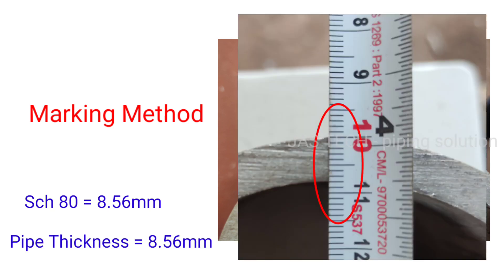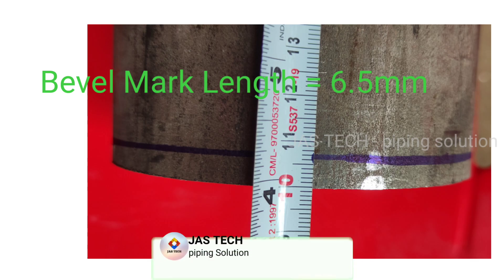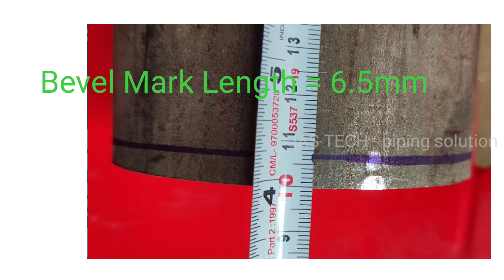As per our calculation, pipe mark length equals 6.5 mm. By using measurement tape, mark 6.5 mm from the edge to the pipe side.